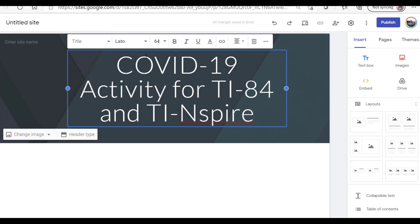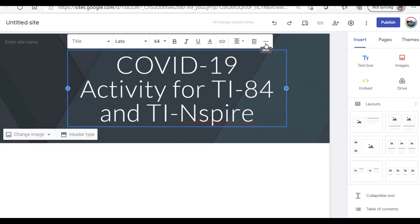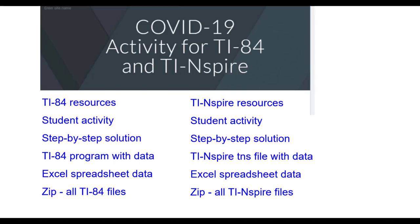A couple of things I'll point out up here: these are the styles, these are the fonts, font size, bold, italics, underline, and this is the text color. This is what we'll use when we insert our links and alignments and more — so investigate that on your own. This is what I would like the page to look like: on the left-hand side will be the TI-84 resources, on the right-hand side the TI-Inspire resources, and then these will be links to that information. So let's go back and start to type that in.